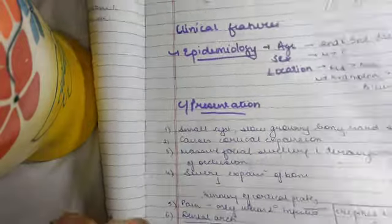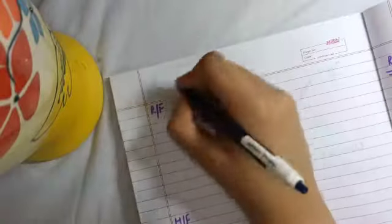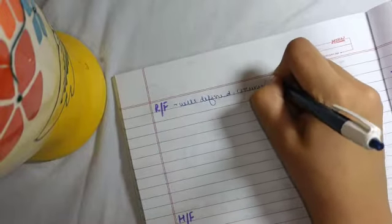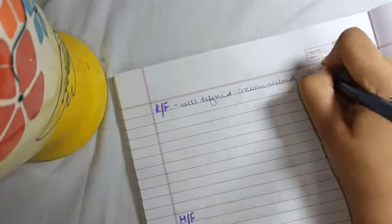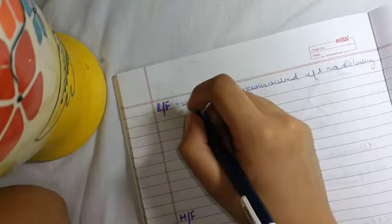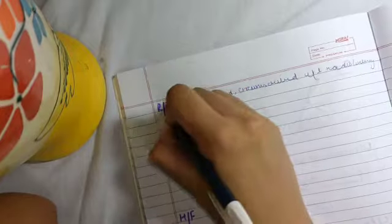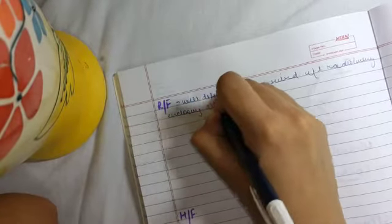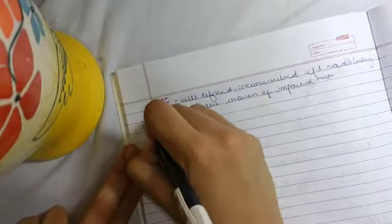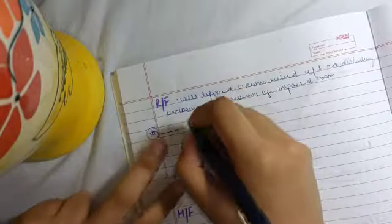In radiographic features, you see a well-defined, circumscribed, unilocular radiolucency at the crown of the impacted tooth, enclosing it.